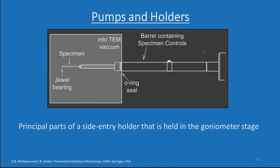Coming to the holders — this is how a TEM holder looks like. There is a barrel containing specimen controls, an o-ring seal, and the shaded section is under vacuum while the other part is not. The specimen sits inside, and there is a bearing which senses the position of the specimen inside the column. This is a side entry holder held in a goniometer stage.